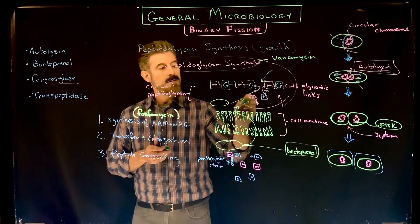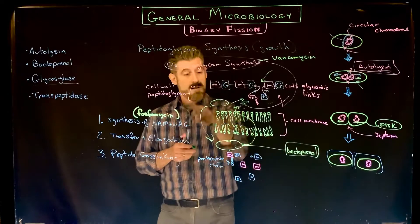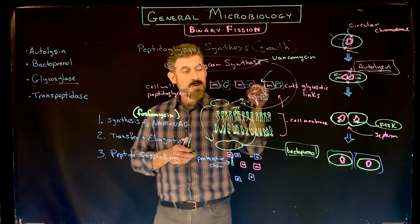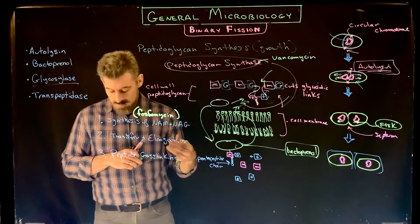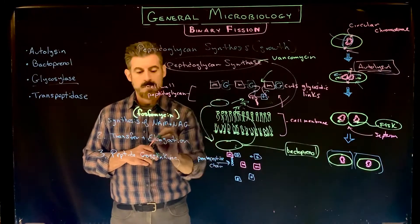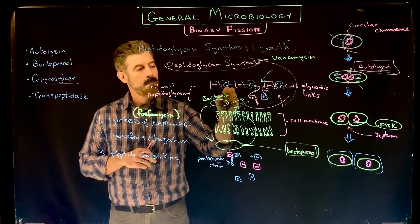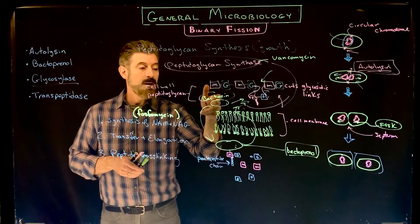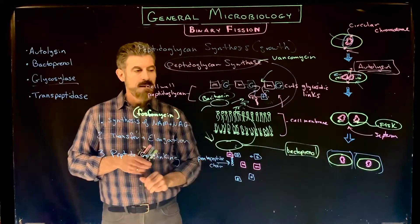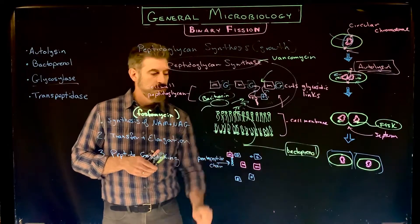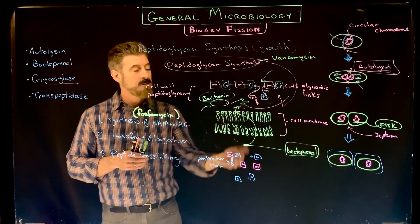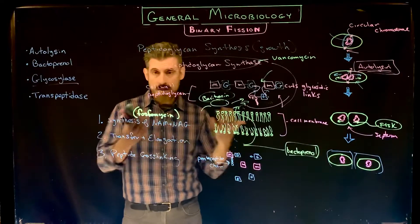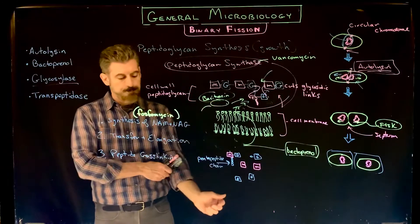Once the bactoprenol comes out here and delivers the NAM-NAG unit, then the bactoprenol will come back into the cytoplasm and can repeat this process, transferring NAM and NAG units out of the cytoplasm so they can be added. Certain antibiotics like bacitracin can bind to the bactoprenol and not allow it to come back into the cytoplasm, which means eventually the cytoplasm doesn't have enough bactoprenol. If autolysin cuts the bonds and there's no new resupply, the cells weaken and the cell can lyse.